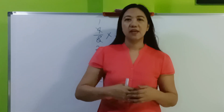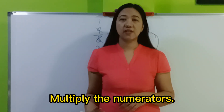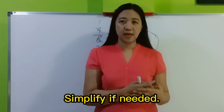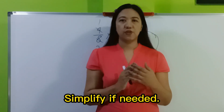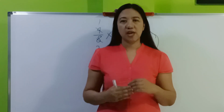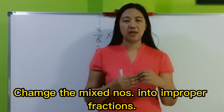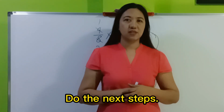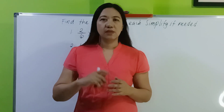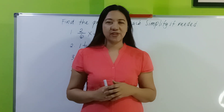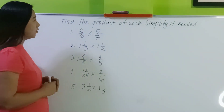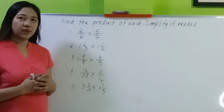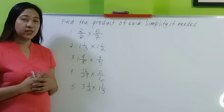Let's have a recap. To multiply proper fractions: multiply the numerators, then multiply the denominators, then simplify if needed. For mixed numbers: first change them into improper fractions, then proceed with the same steps. Now let me test if you've understood the lesson — find the product of each and simplify if needed. You may pause the video and come back for the solutions.